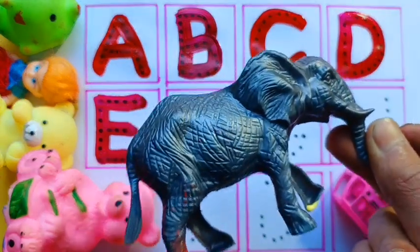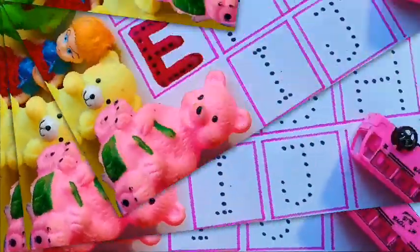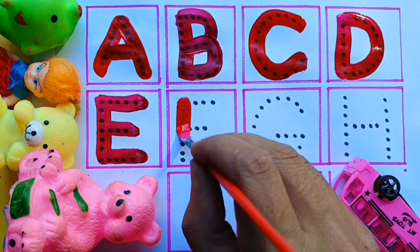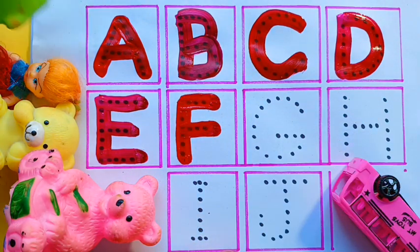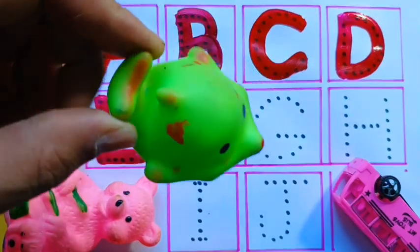F. F for fish, F for fish. Fish means machli.